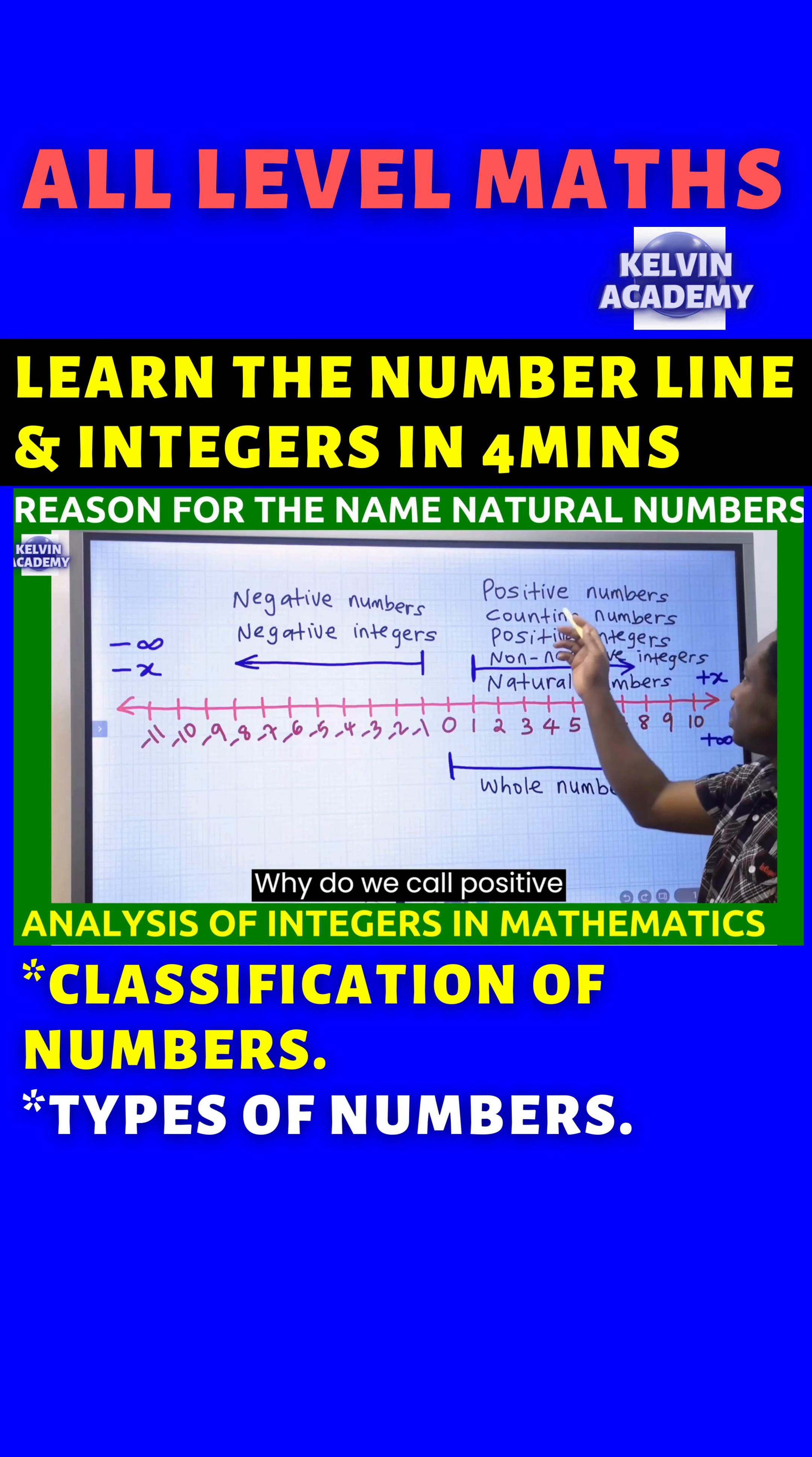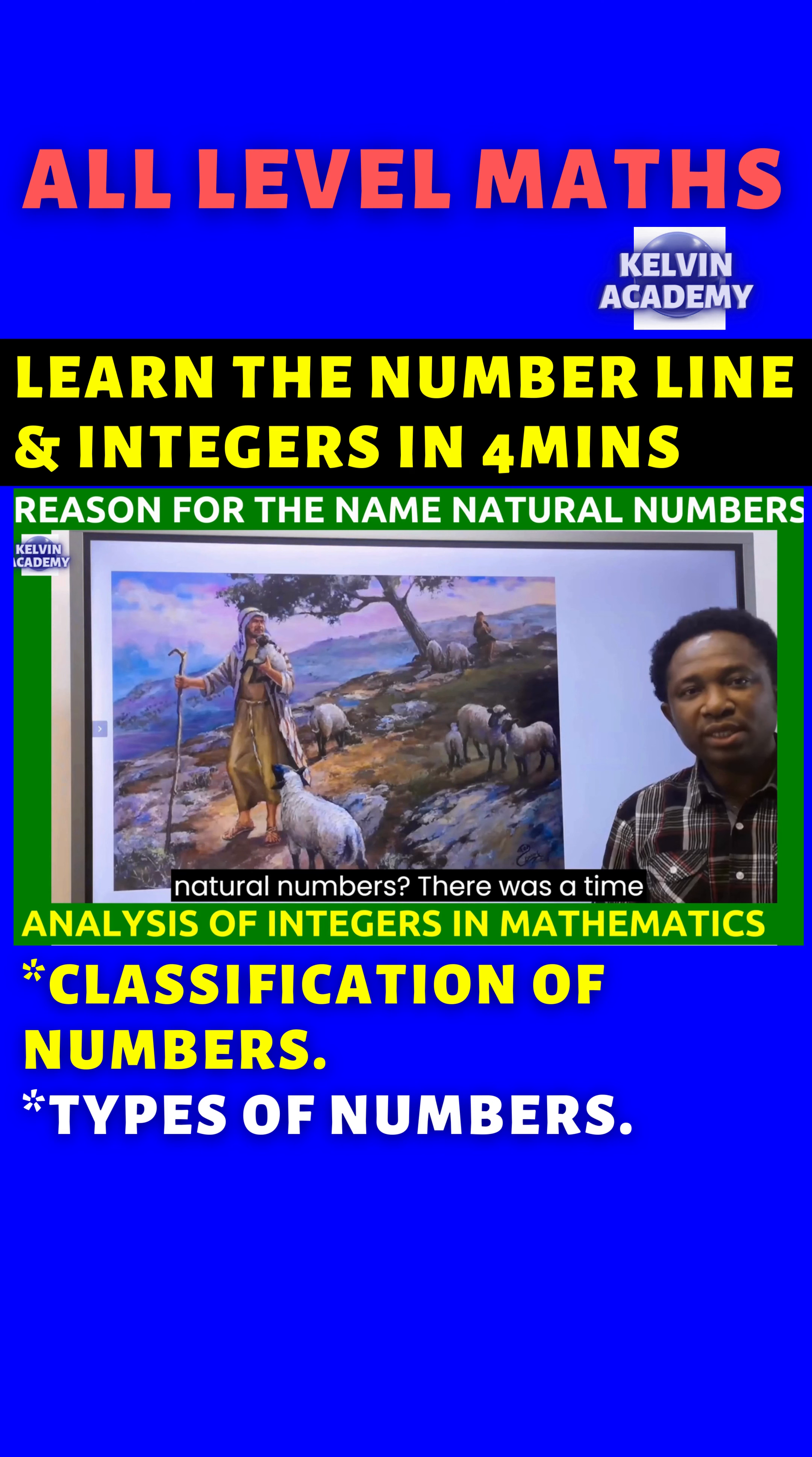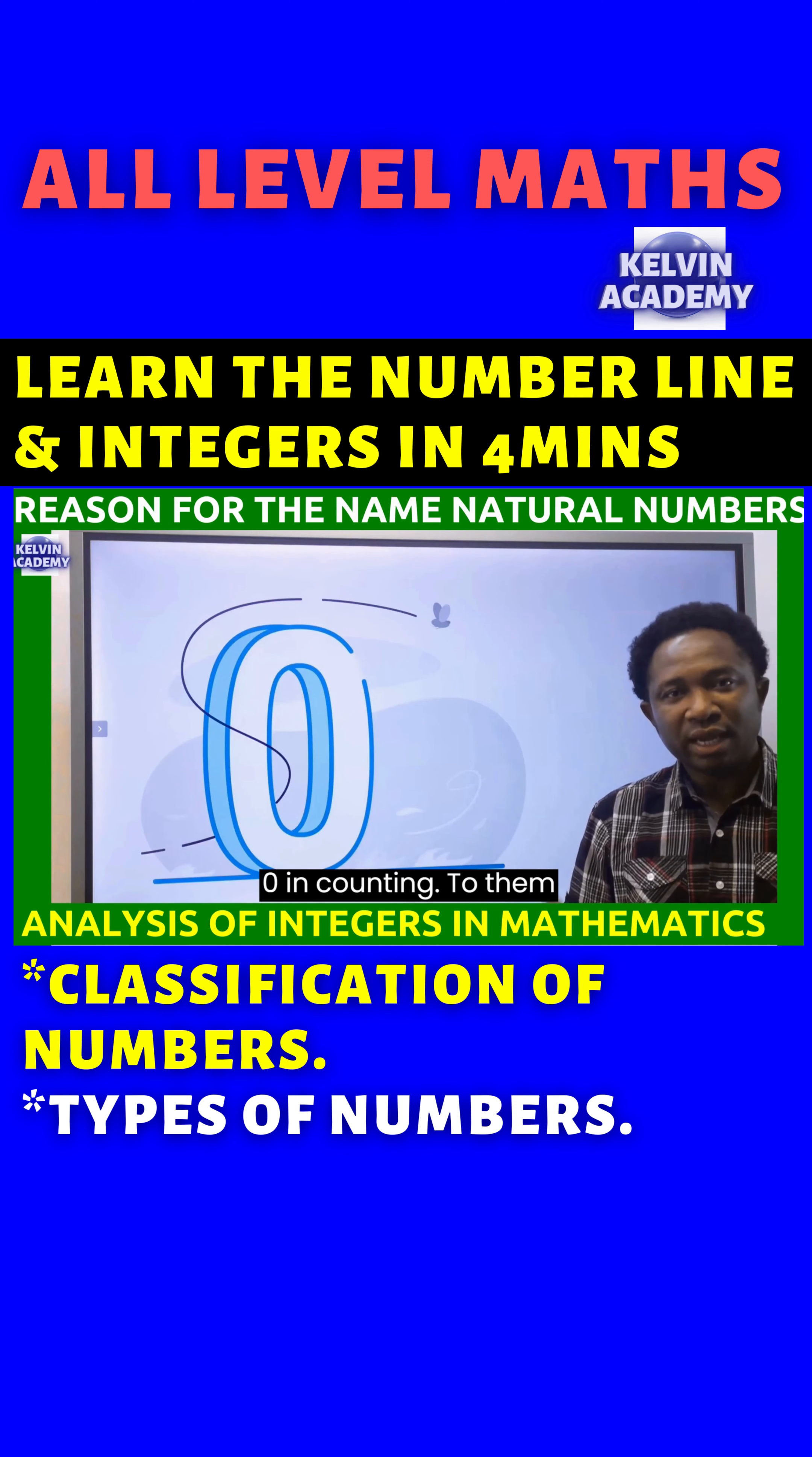Why do we call positive numbers counting numbers, positive integers, non-negative integers, natural numbers? There was a time when people do not believe in nothing, void or zero in counting.